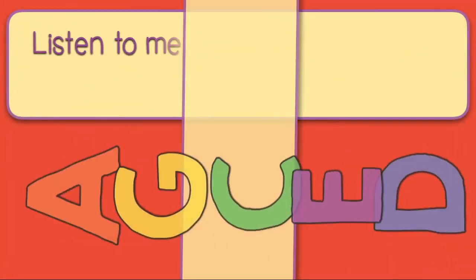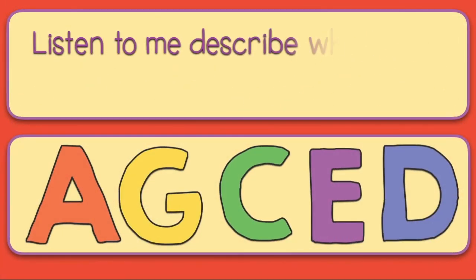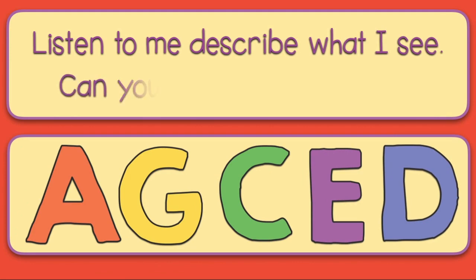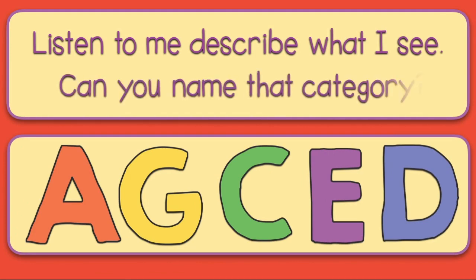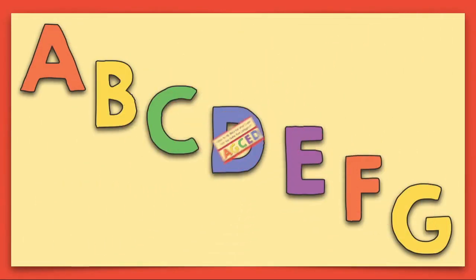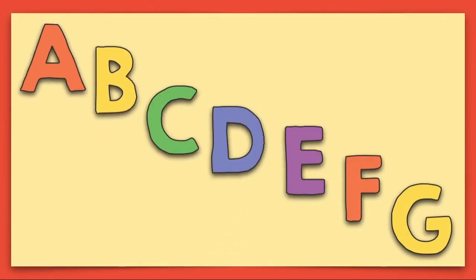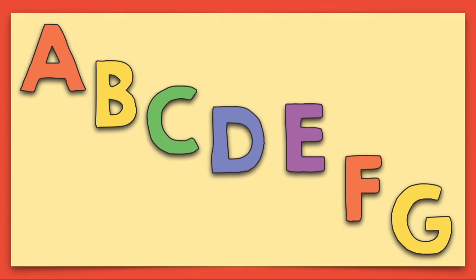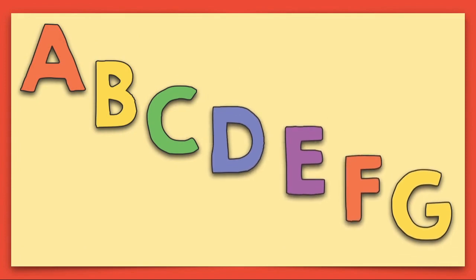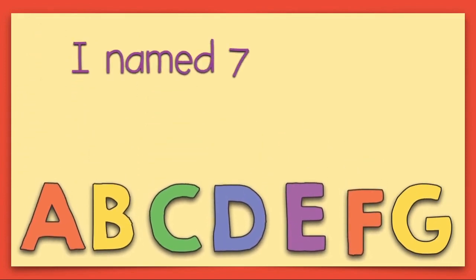Listen to me describe what I see. Can you name that category? A, B, C, D, E, F, G. I named seven letters.